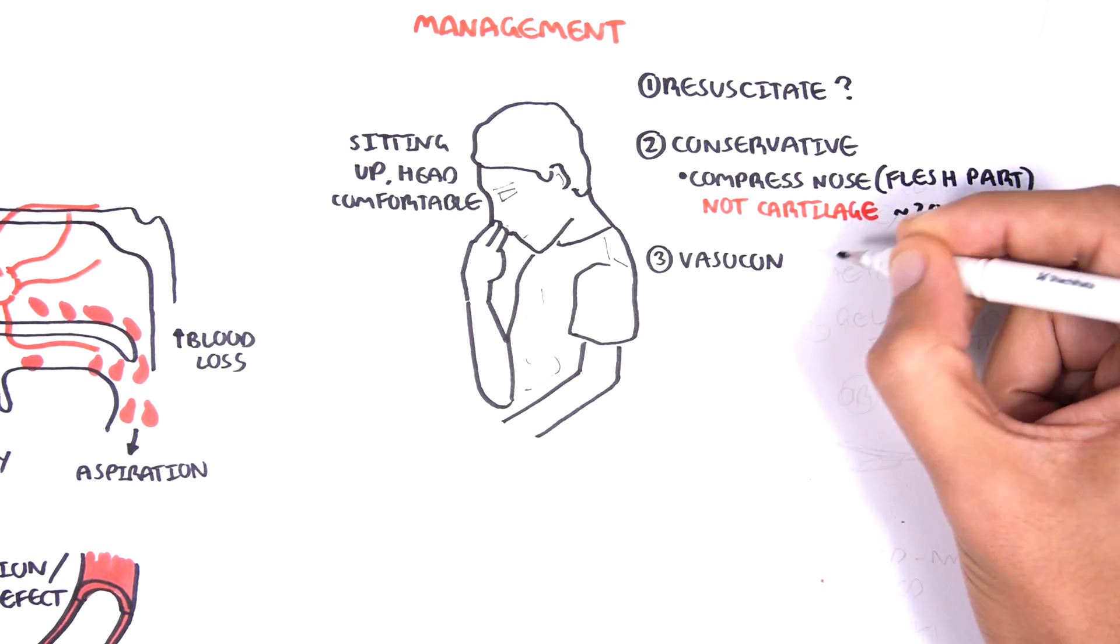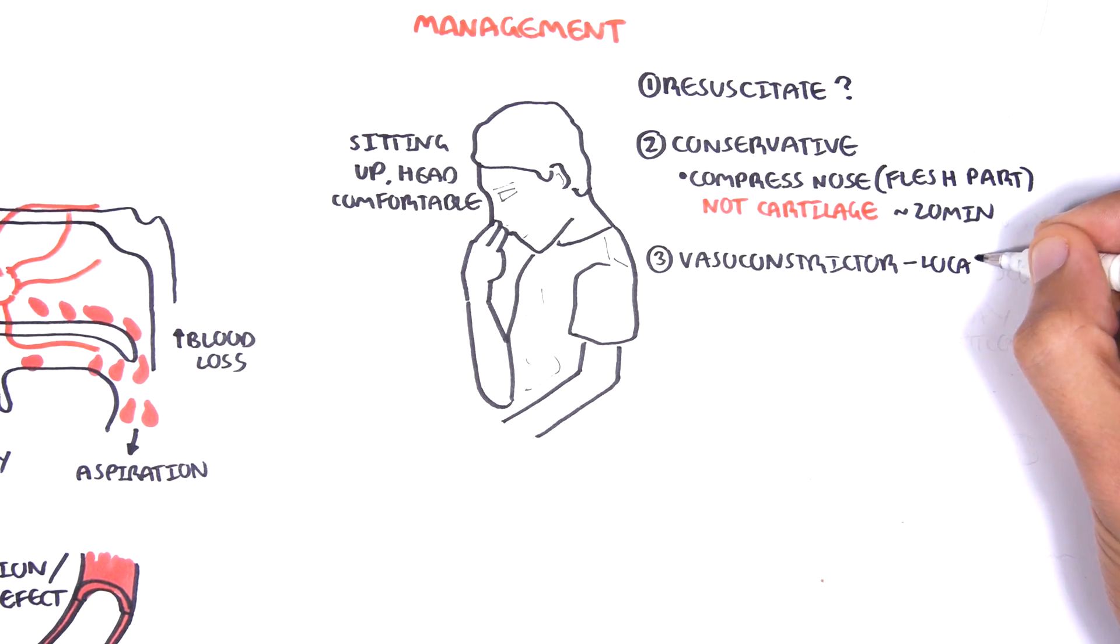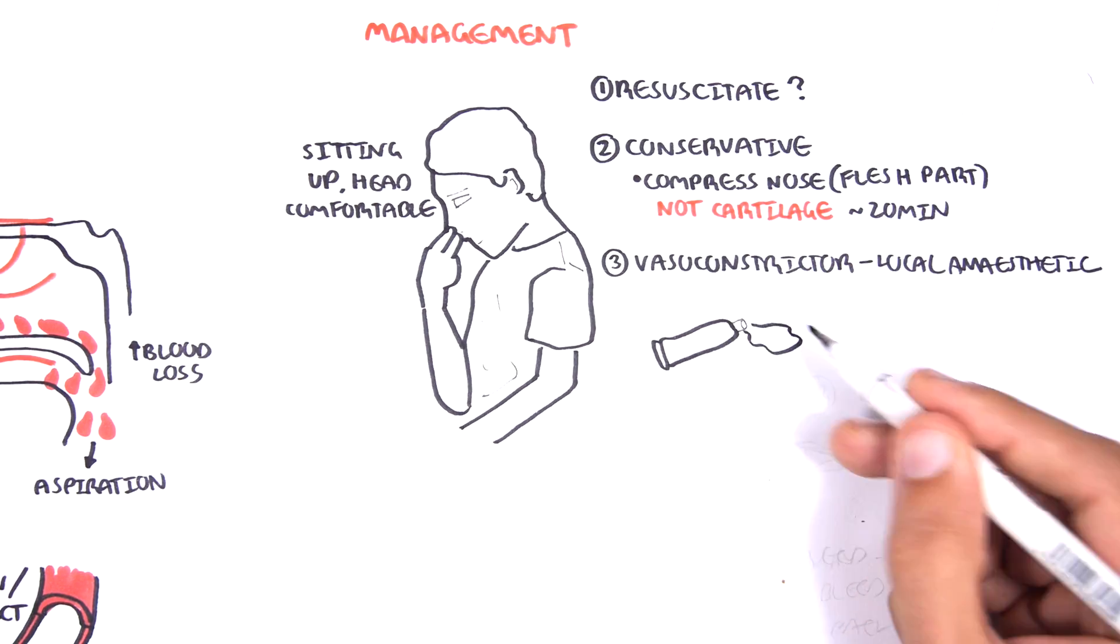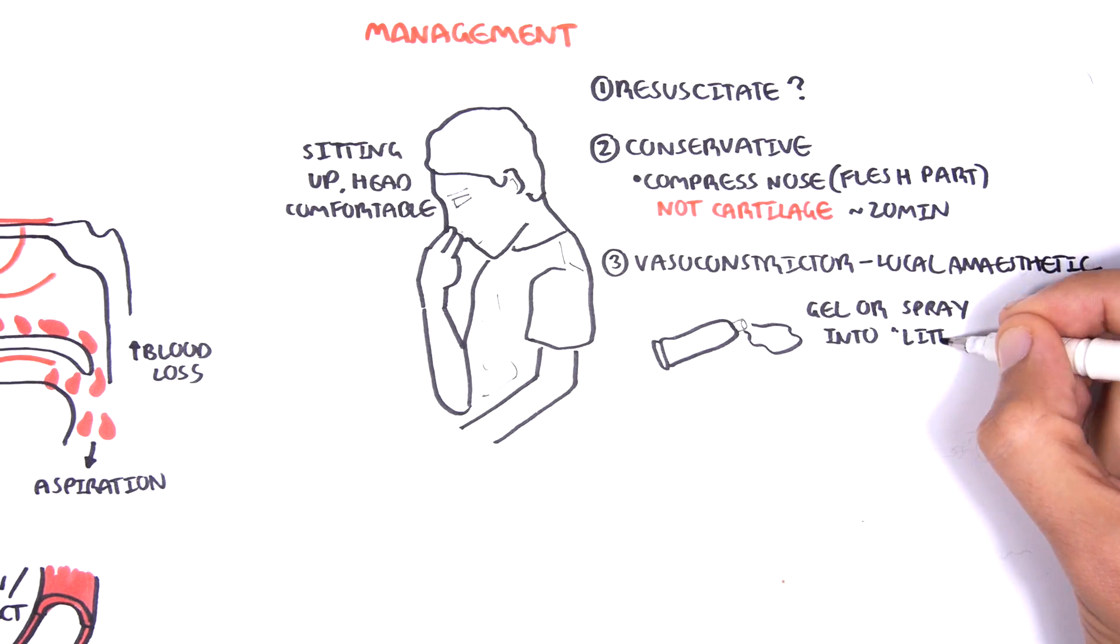You can also use vasoconstrictors such as local anesthetics to also reduce the pain. This can be a spray or gel and Little's area is targeted in this case.